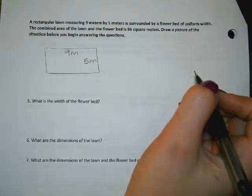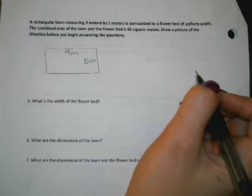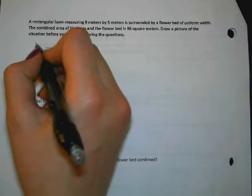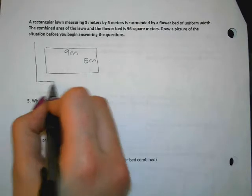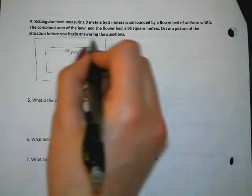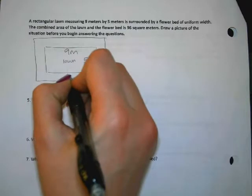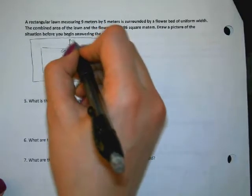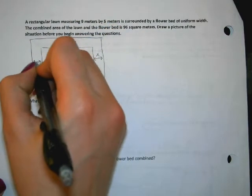And it says that the lawn measures nine meters by five meters. And it says that the lawn is surrounded by a flower bed of uniform width. Do you guys know what that means? Yeah, so the flower bed all the way around is the same width. Since they don't tell us what the width is, we're going to call it x because we don't know. So I'm going to label that all of these widths are the same, they're all a width of x.